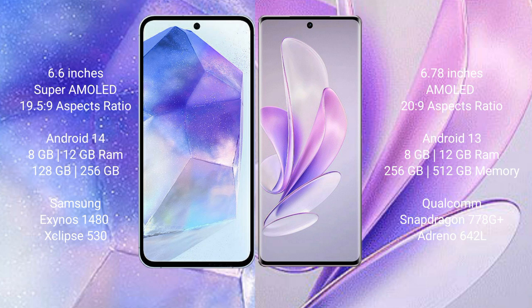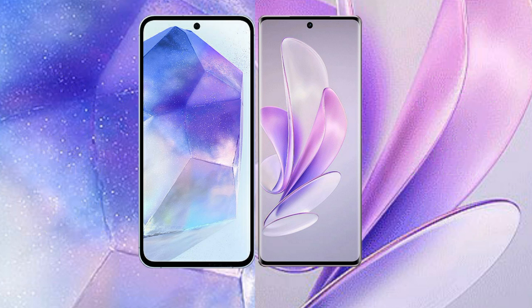Vivo A17 runs on the Android 13 operating system. It comes with 8GB or 12GB RAM and 256GB or 512GB internal storage. It features the Qualcomm Snapdragon 778G Plus processor and GPU Adreno 642L.